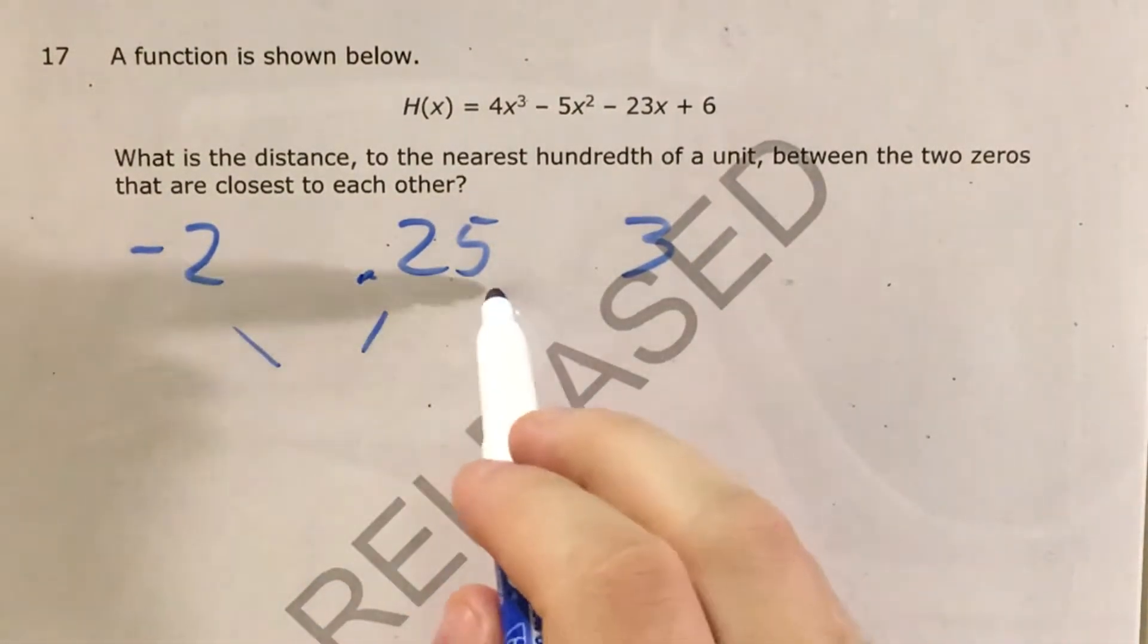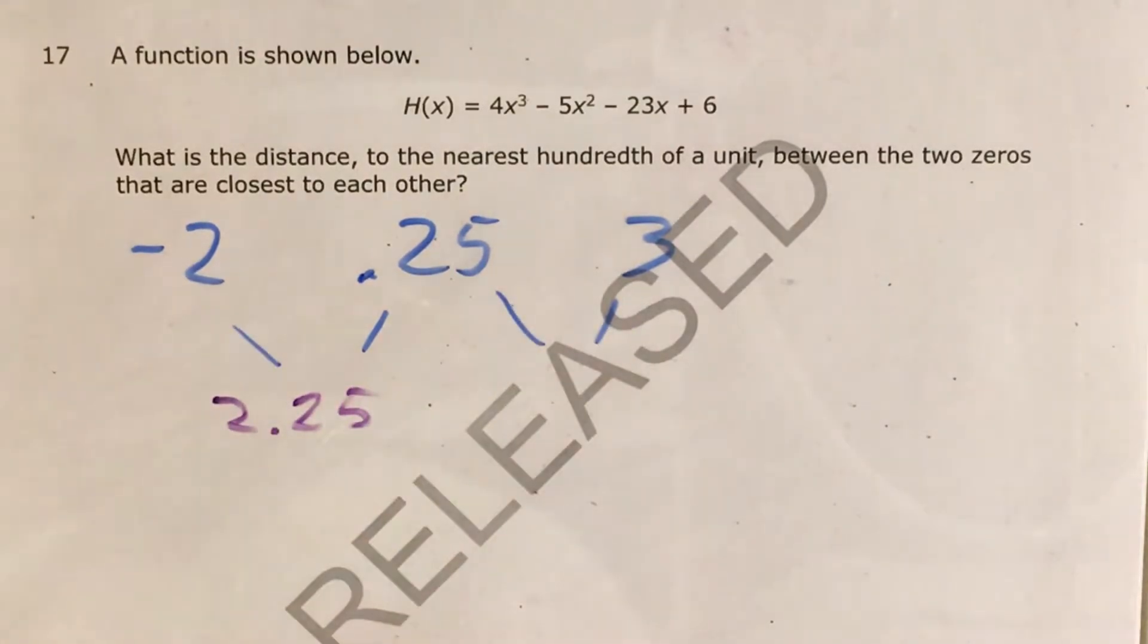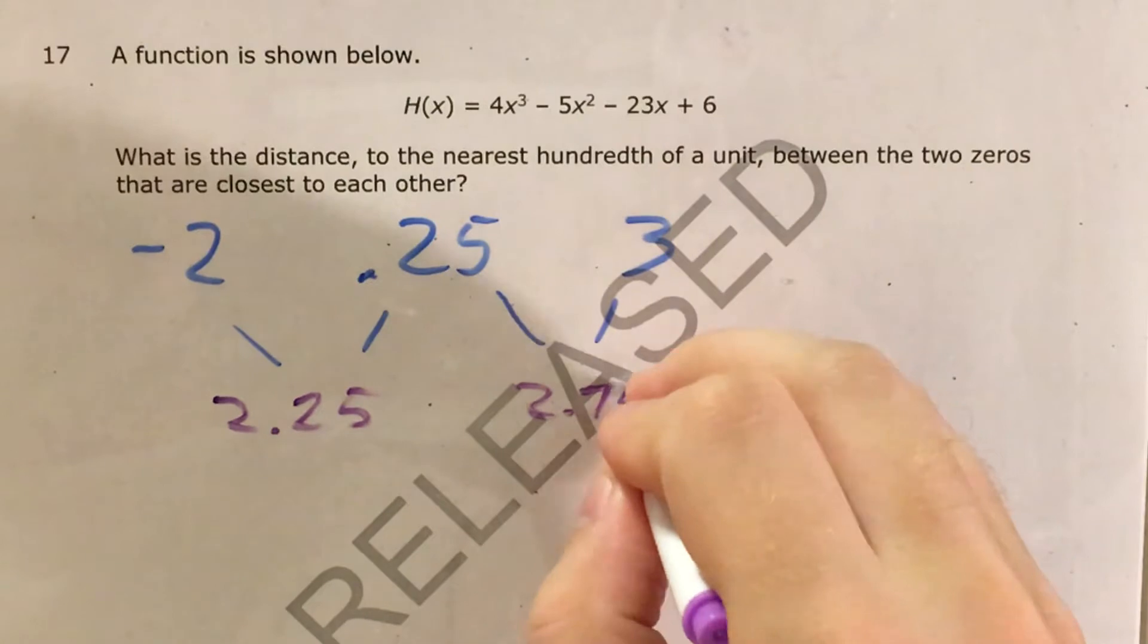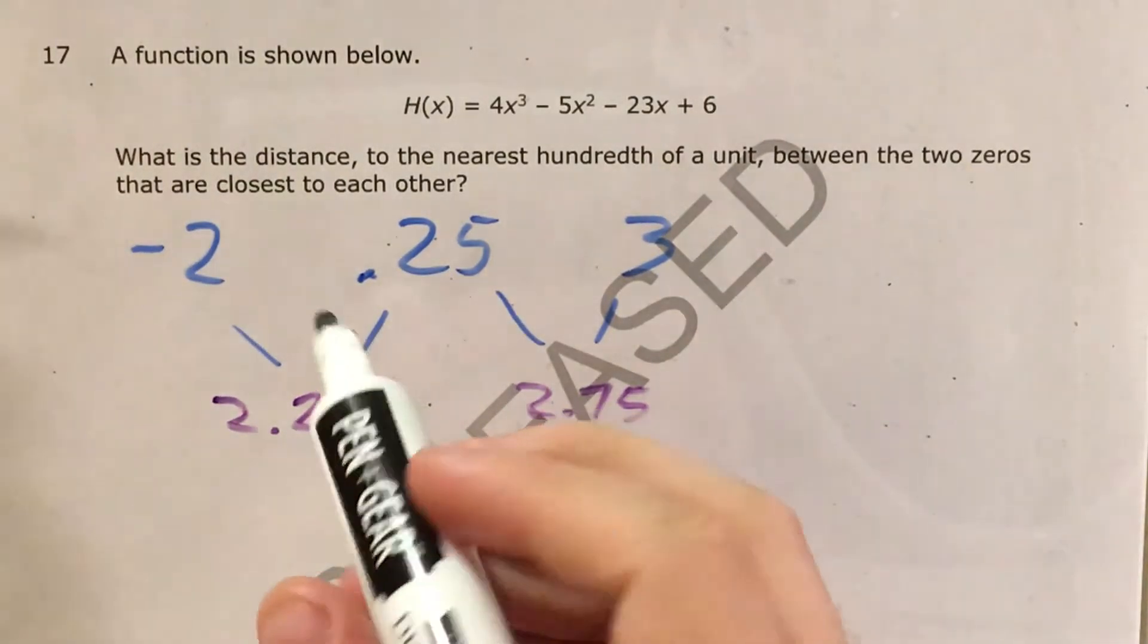Now I have to find the distance between this pair of zeros and this pair of zeros. 0.25 minus -2 is 2.25. 3 minus 0.25 is 2.75. If I'm looking for my closest zeros, that's going to be these two. Their distance is 2.25 units, and now I have my answer.